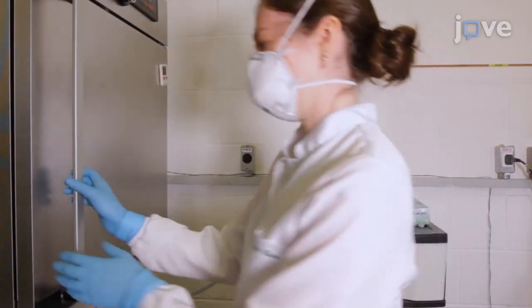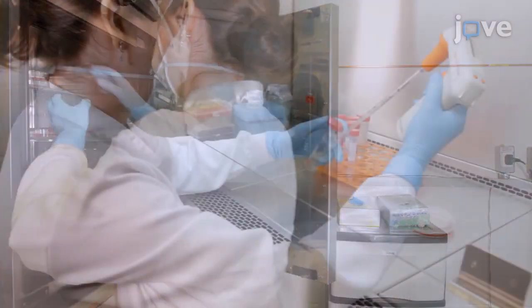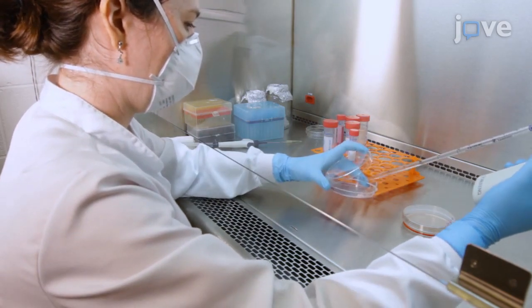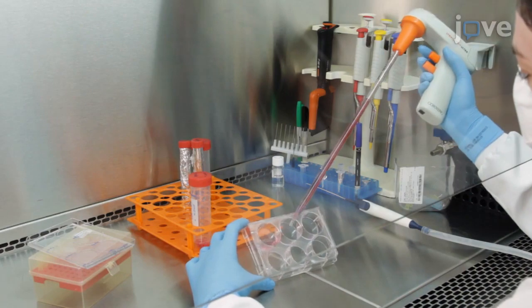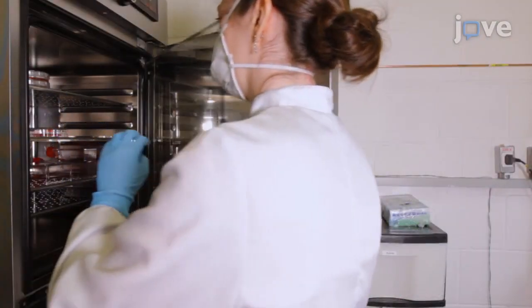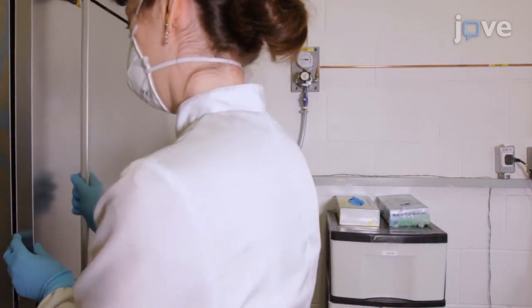Begin by culturing HEC293 cells with stable expression of the gene of interest. Split the cells using 0.25% trypsin EDTA, then plate 300,000 cells per well in six-well plates and incubate them for 24 hours at 37 degrees Celsius in 5% carbon dioxide.